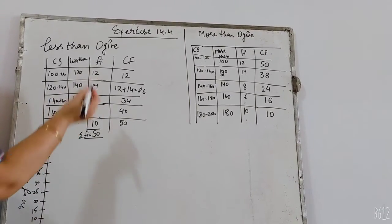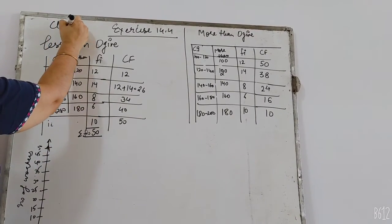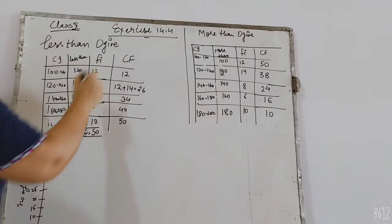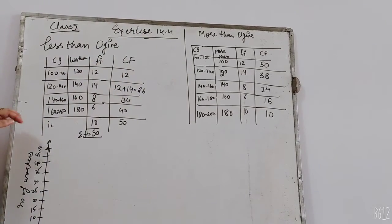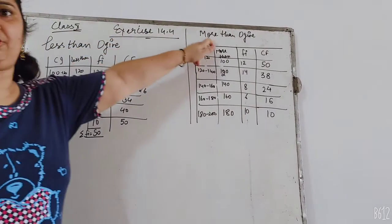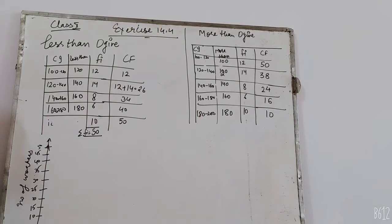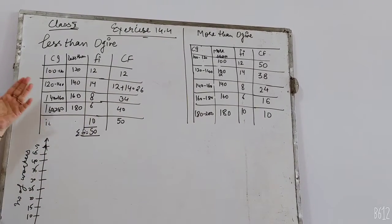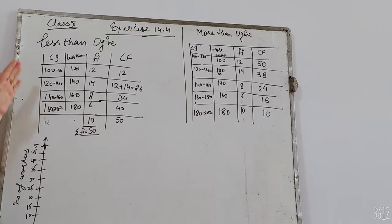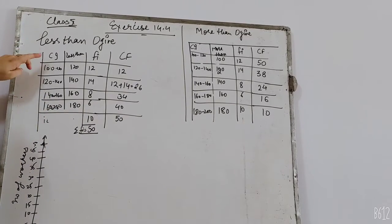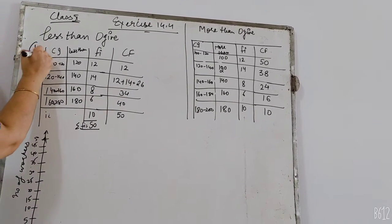Hello students, we are continuing with class 10, chapter 14. This is 14.4 exercise, which is less than ogive and more than ogive. I am explaining less than ogive. This is a part of the median. The median by formula you have learned in the previous video. Now, we will see this graph. You have given question first. 14.4 is the first question.